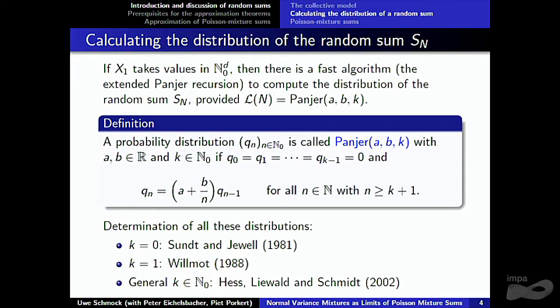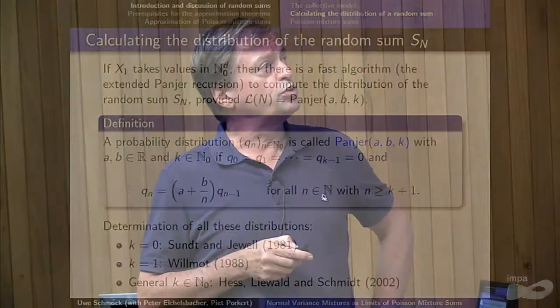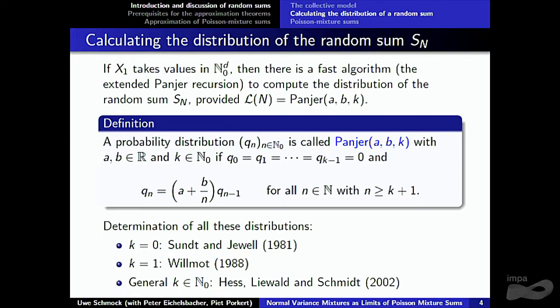With modern computers you can easily calculate the distribution of the random sum in a discrete setting, which is not really a problem since in practice all claims are multiples of one unit of currency. You can even do it in a d-dimensional grid where all coordinates are natural numbers. There's a fast algorithm — the so-called extended Panjer recursion — to compute the distribution of the random sum, but for that you need a condition on the distribution of the number of claims: namely, the distribution needs to be in a Panjer class.